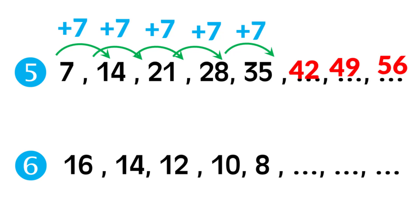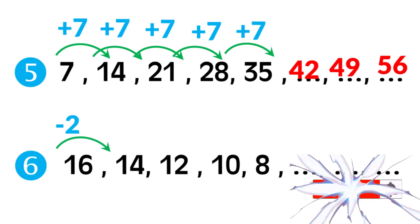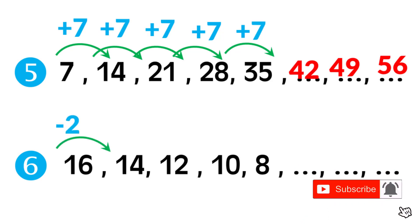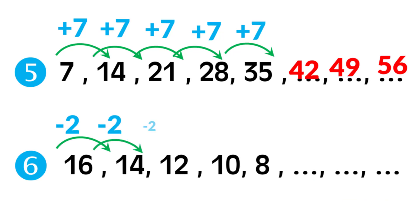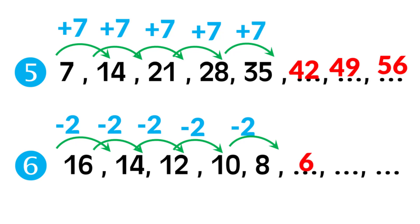Forty-nine plus seven: forty-nine plus one is fifty, then add six, equals fifty-six. Number six: sixteen, fourteen, twelve, ten, eight — we subtract two each time. Sixteen minus two equals fourteen. Fourteen minus two equals twelve. Twelve minus two equals ten. Ten minus two equals eight. Eight minus two equals six. Six minus two equals four. Four minus two equals two. If you like my video, subscribe to my channel for more math videos. Thanks for watching, see you next video!